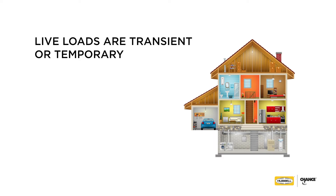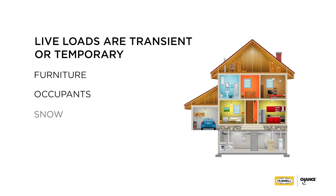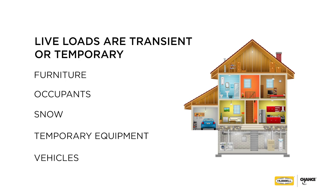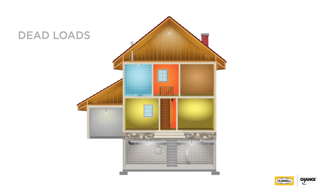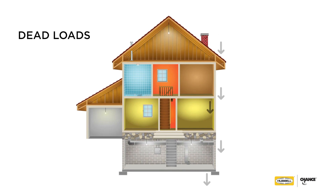Live loads may be either static or dynamic. The amount and/or direction of the load may change frequently due to its transient nature. Live load is calculated with less certainty than dead load. Examples of live loads include furniture, occupants, snow, temporary equipment, or vehicles.